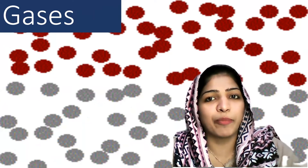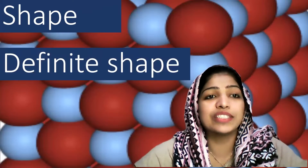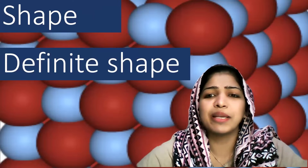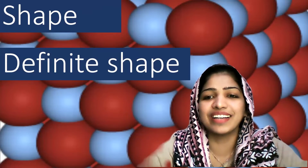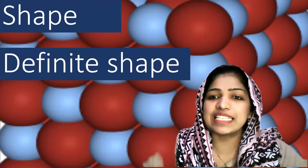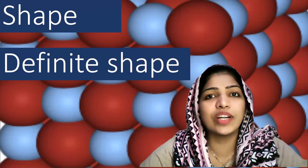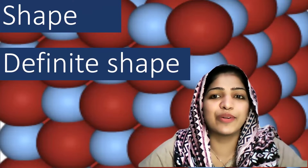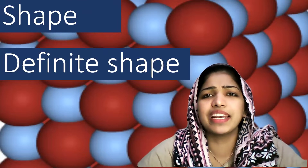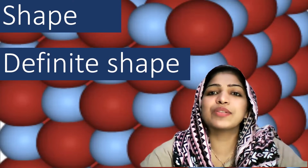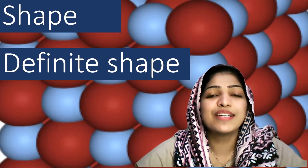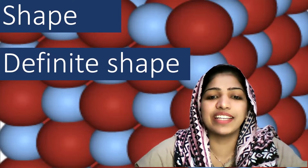We will talk about the physical properties — specifically the shape. If you have a mobile phone, a pen, a writing table — these are solids. All solid objects have a definite shape. Even if you break a pen, you change its shape by force, but solids do possess a definite shape.